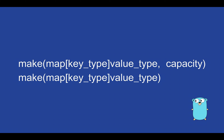Another way to create a map data structure in Go is by using the make function. This function is a built-in function that takes the type of the map as an argument and returns an initialized map. The syntax is: make(map[keyType]valueType, capacity). We can even not specify the initial capacity.